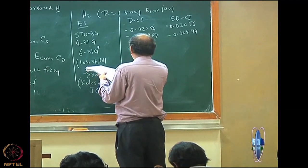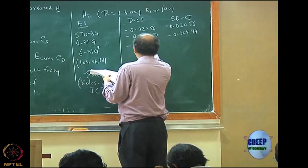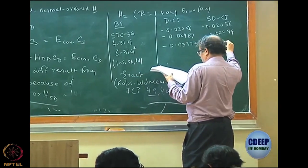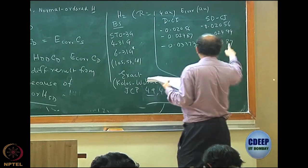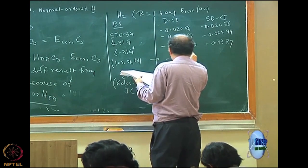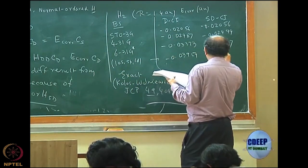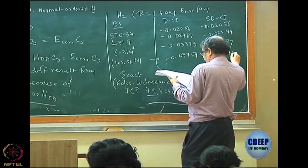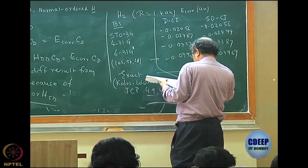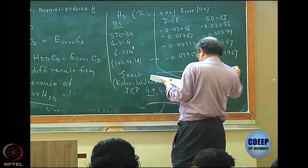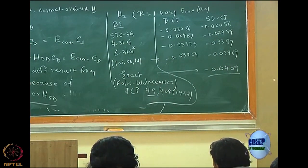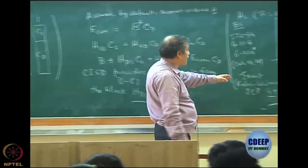At 6-31G*, the DCI value is −0.03373 and SDCI is −0.03387 — a reasonably large difference now. With 10S5P1D, the values are −0.03954 and −0.03969, which are almost similar. Interestingly, the exact result is still −0.0409, so these large-basis CI results are still above the exact value, which uses a far larger basis.